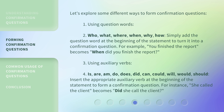Let's explore some different ways to form confirmation questions. 1. Using question words: who, what, where, when, why, how. Simply add the question word at the beginning of the statement to turn it into a confirmation question. For example, 'you finished the report' becomes 'when did you finish the report?'